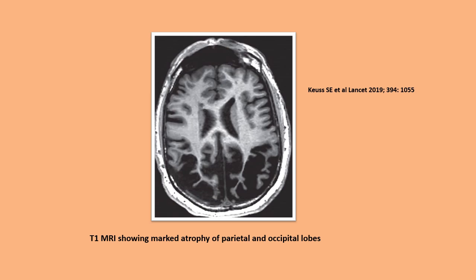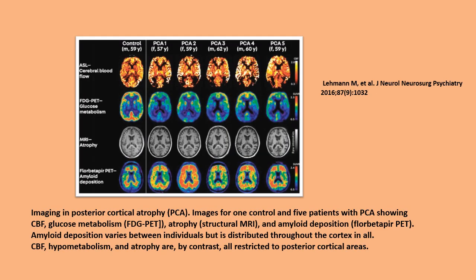This T1-weighted MRI shows marked atrophy of the parietal and occipital lobes. This picture shows imaging in PCA for one control and five patients, depicting cerebral blood flow, glucose metabolism on FDG-PET, atrophy on structural MRI, and amyloid deposition on amyloid PET. Amyloid deposition varies between individuals but is distributed throughout the cortex, whereas hypometabolism and atrophy are restricted to the posterior cortical areas.